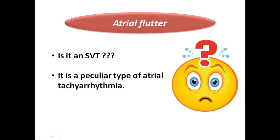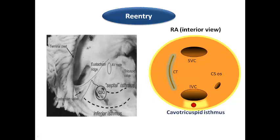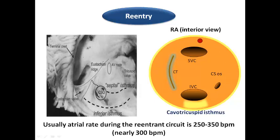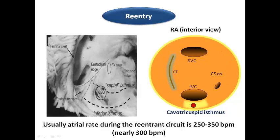Atrial flutter represents a re-entrant mechanism. We can see here an interior view of the right atrium showing a macro re-entrant circuit inside the whole right atrium. There is a slight slowing of conduction at a region called the cavo-tricuspid isthmus — the isthmus tissue between the entry of the IVC and the tricuspid annulus. This is the target site for ablation of atrial flutter and the key step in forming the re-entrant circuit.